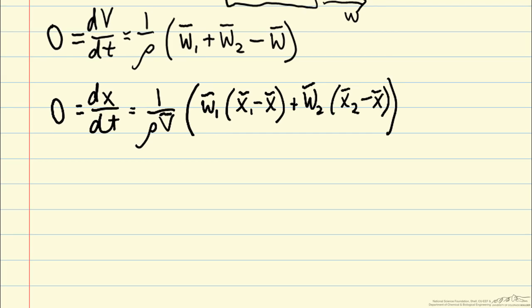So we'll start out with our first mass balance equation for dv/dt. If we set that equal to zero, we can multiply through by rho and then really easily solve for w bar, our outlet flow rate, is equal to w1 bar plus w2 bar.